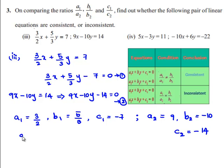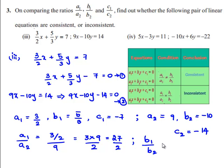Now the value of a1/a2 is equal to 3/2 divided by 9. This is equal to 3 multiplied by 9 by 2, which is 27/2, and the value of b1/b2 is equal to 5/3 divided by -10, which is -50/3.